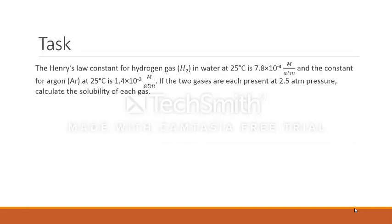The Henry's law constant for hydrogen gas in water at 25 degrees Celsius is 7.8×10⁻⁴ mole per atm, and the constant for argon at 25 degrees Celsius is 1.4×10⁻³ mole per atm. If the two gases are each present at 2.5 atm pressure, calculate the solubility of each gas.